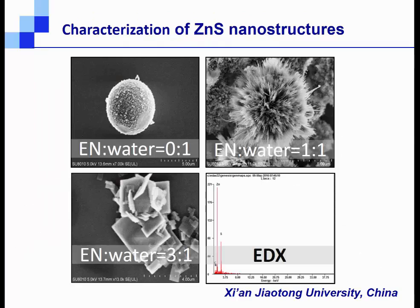We can see the SEM results. With pure water solution we get microparticles of about 4 micrometers. This is the urchin-like nanostructure, which is actually made of an assembly of nanowires with a length of about 2 to 3 micrometers. When the ratio turns to 3:1, the result turns to nanoflakes. The EDS reflects the elemental composition — mostly zinc and sulfur — which proves the purity of these nanostructures.